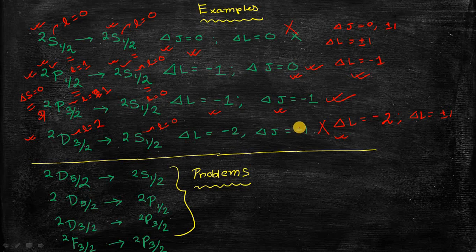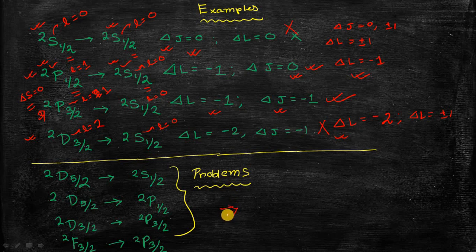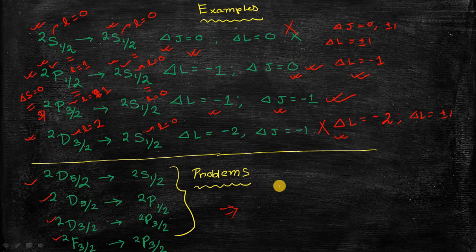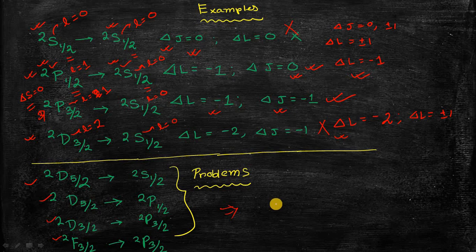I am also leaving some practice problems for you to predict which transitions are allowed and which are not. If you have any doubts, you can ask through the comment section and I will solve the problems in a separate lecture if needed. That is all from this chapter. In the next lecture I will talk about the helium atom system, which is a two-electron system, and we will discuss the approximations needed to solve it. Till then, take care of yourself. Bye.